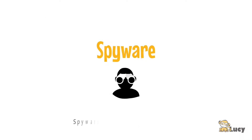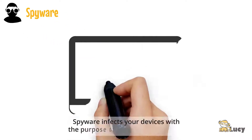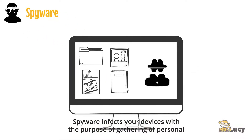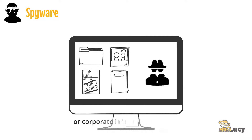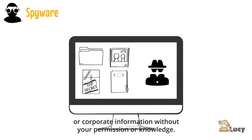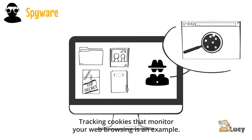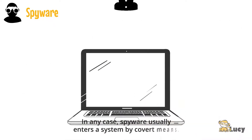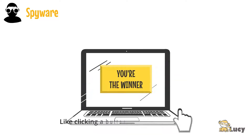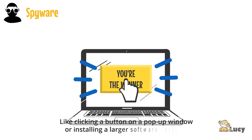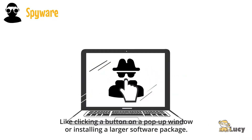Spyware infects your devices with the purpose of gathering personal or corporate information without your permission or knowledge. Tracking cookies that monitor your web browsing is an example. Spyware usually enters a system by covert means, like clicking a button on a pop-up window or installing a larger software package.